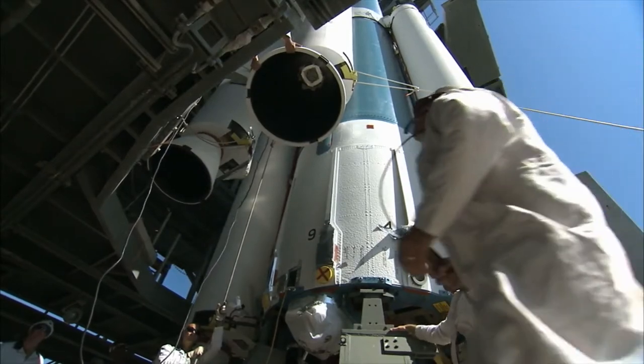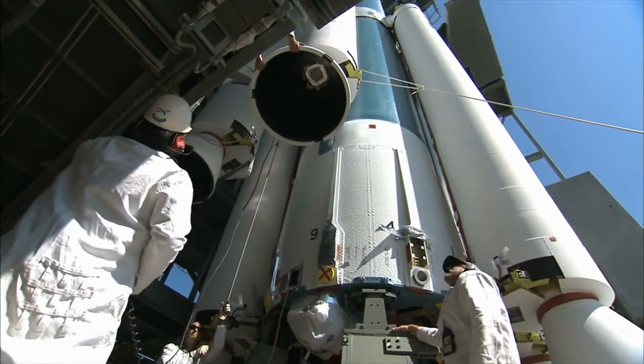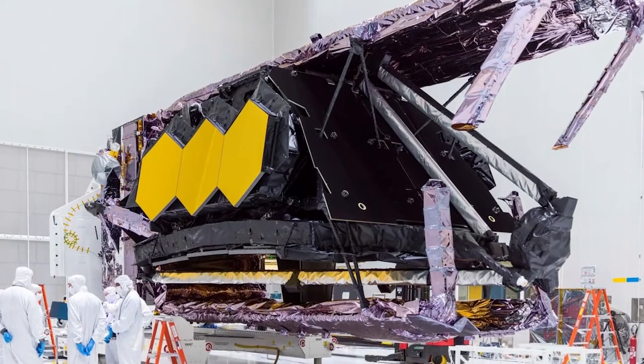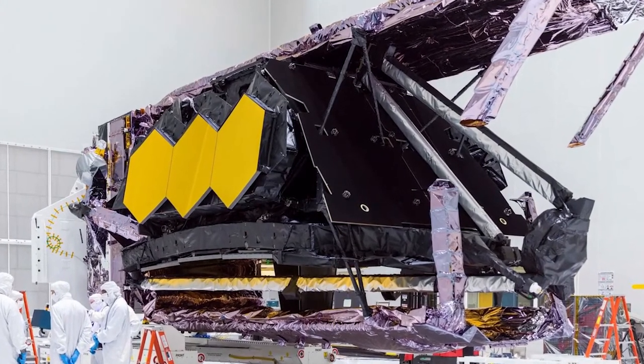Webb's mirror assembly was so large that it had to be folded to fit in a rocket before it could be used. In March, NASA shared another image while Webb was still in the tuning process.